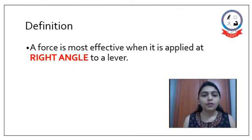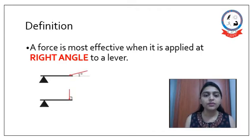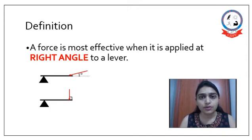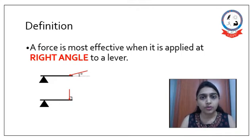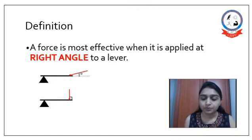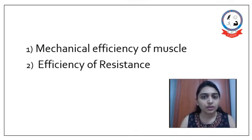Definition: a force is most effective when it is applied at right angle to a lever. If any force is applied at right angle, the rotatory component or vertical component is equal to the right angle force. If the angle of force is less than or more than 90 degrees, the force divides into vertical and horizontal components, with more of the horizontal component being used, resulting in less effective force than at right angle.